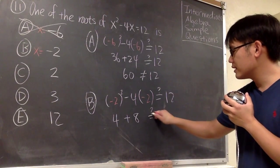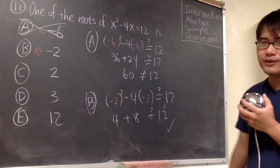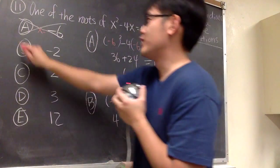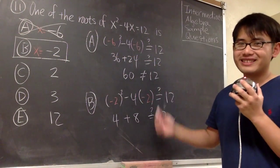Do we get 12? 4 plus 8. Of course, that's equal to 12, right? So we got our answer. Choice B is the correct answer to this question. That's it.